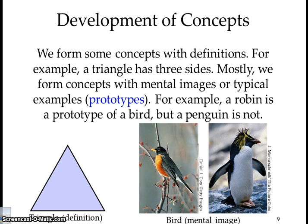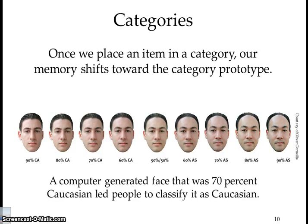We form some concepts with definitions — for example, a triangle has three sides. Mostly we form concepts with mental images or typical examples called prototypes. A robin is a prototype of a bird, but a penguin is not, because a robin can fly and a penguin can't. Once we place an item in a category, our memory shifts toward the category prototype — our best example.